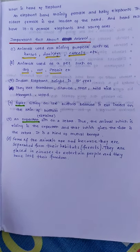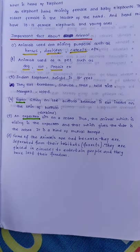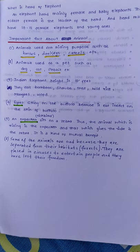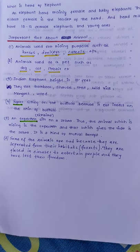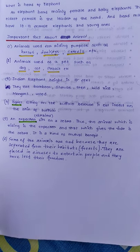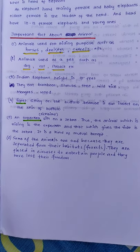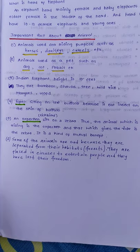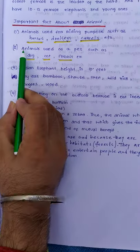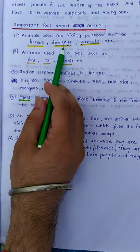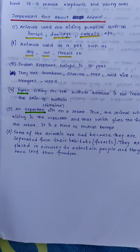Now let us see some important facts about animals. Animals used for riding purposes — first of all, horses, donkeys, and camels. You can see camels in Rajasthan.